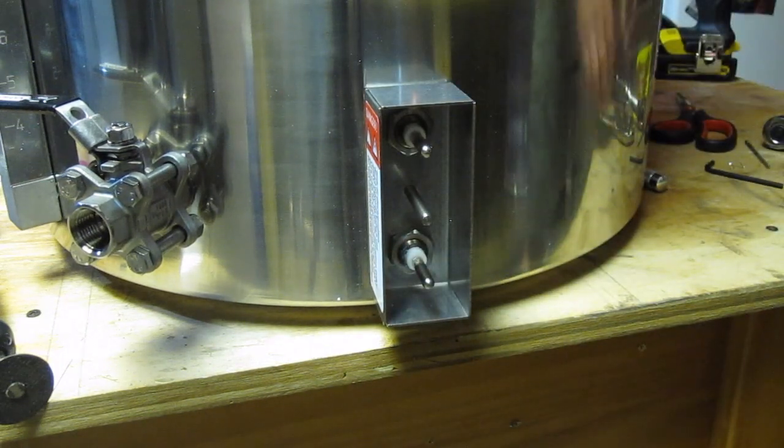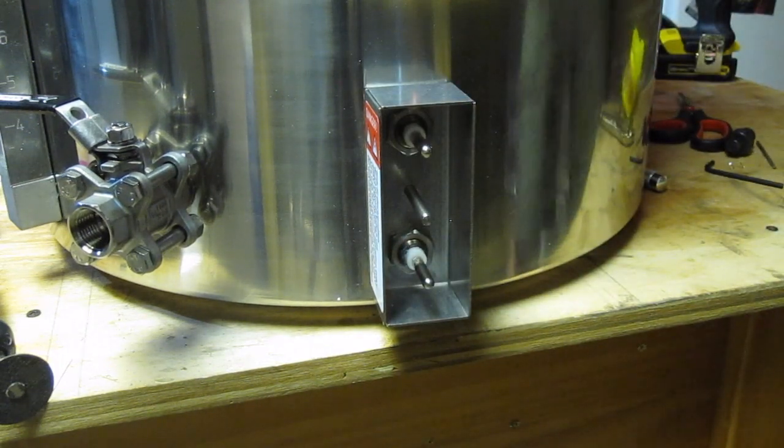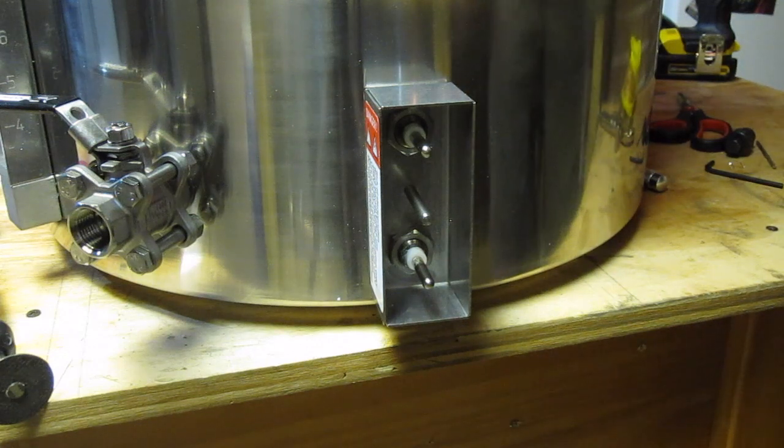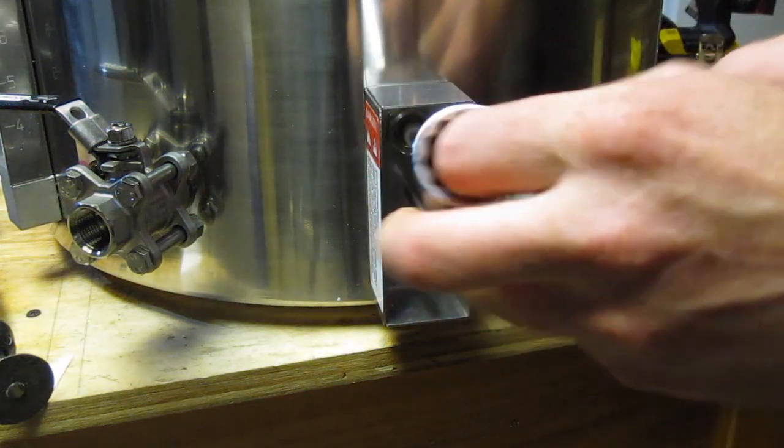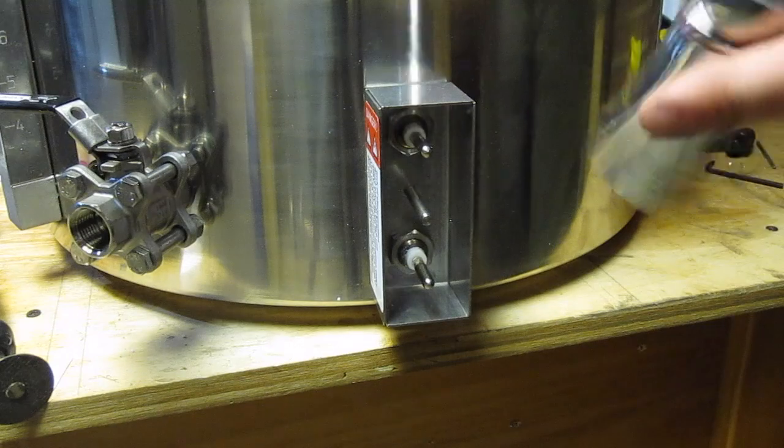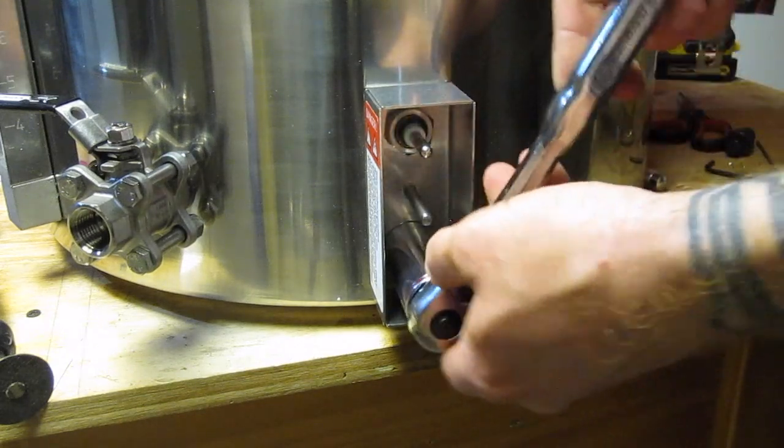So once that's sort of hand tightened on, I'm going to take a socket wrench. This is a 7/8 socket wrench. It's got to be extra deep to fit over these prongs. And just tighten up.